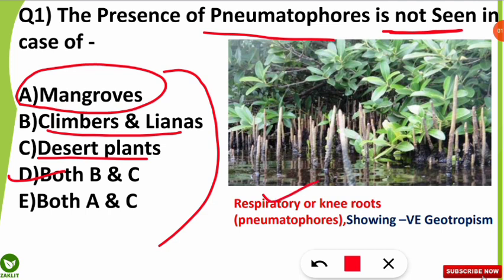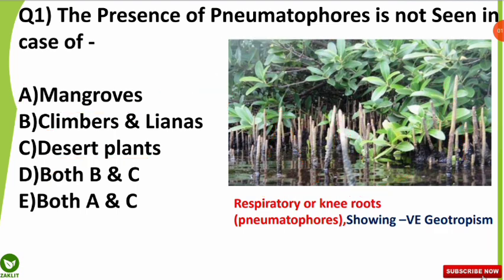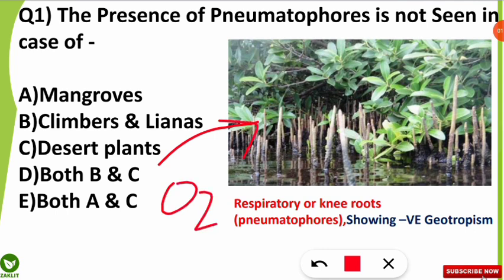This is the example of the Avicennia species, that is the black mangrove, and here you can see these erected structures which are coming out from the ground — these are the pneumatophores or the respiratory roots. They came out of the ground in order to take oxygen from the atmosphere, because the soil conditions are lacking oxygen.